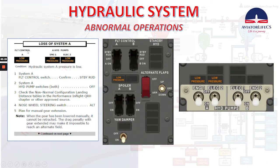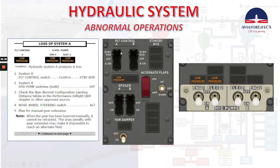Now let's talk about the loss of system A. In the flight control panel we will see the low pressure light illuminated for engine 1 and EDP 2 on the system A condition. Hydraulic system A pressure is low. System A flight control switch — confirm standby rudder, so we confirm and we select standby rudder. System A hydraulic pump switches — both off.